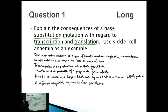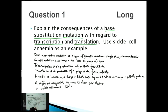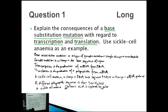Because we're using sickle cell anemia as an example, we have to give specifics. In sickle cell anemia, glutamic acid is replaced by valine. An easy way to remember this is that G comes before V in alphabetical order, so G is replaced by V. So glutamic acid is replaced by valine, and this results in sickle cells.